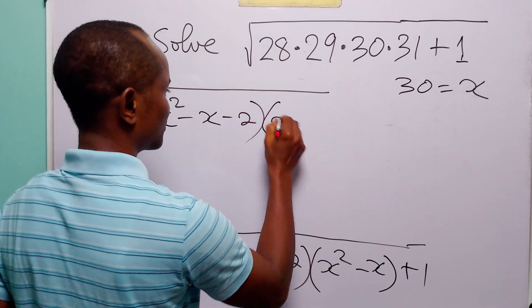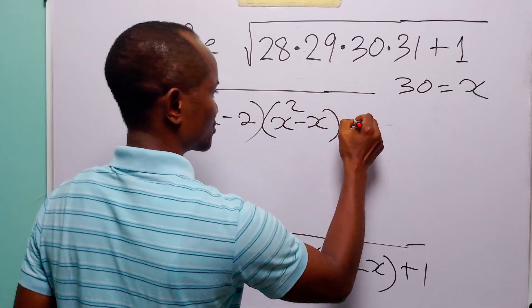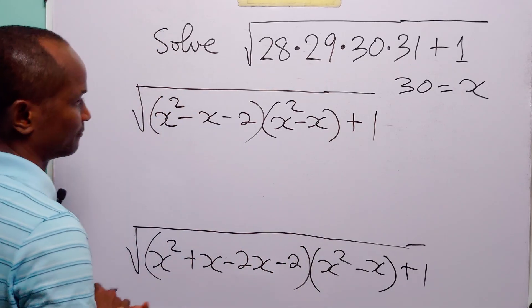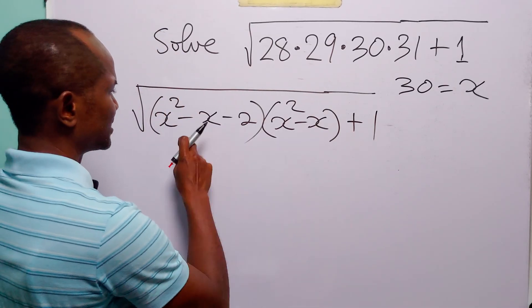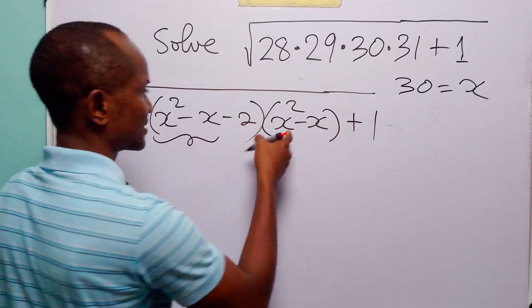Then here we have x squared minus x. And then of course we still have plus 1. Now when you look at these two you're going to see that here we have x squared minus x.